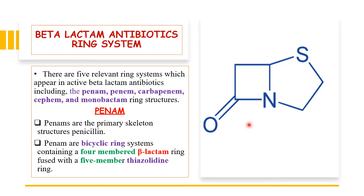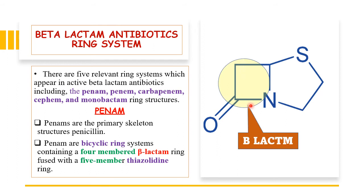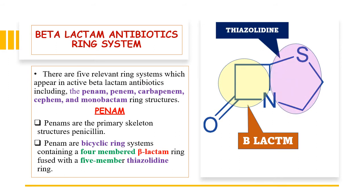In the penam chemical structure, you may observe that the beta-lactam portion contains the carbonyl carbon, alpha carbon, and beta carbon directly bonded with nitrogen. This beta-lactam ring is fused with the five-membered thiazolidine ring. In the thiazolidine ring, another heteroatom is present — the sulfur atom. So in the penam ring, there are two heteroatoms: sulfur and nitrogen.